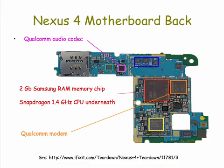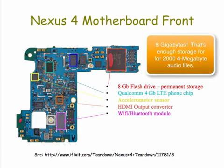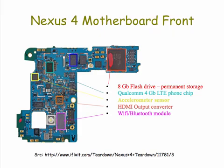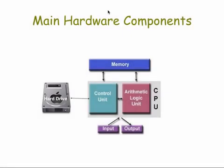And the modem component controls its communication with the internet. If you turn the motherboard around, you'll find still other components. The eight gigabyte flash drive is for permanently storing your apps and your music and your pictures. Eight gigabytes is eight billion bytes or eight billion characters. You also have the chips for the phone, for communicating with the internet. The HDMI chip is for displaying high definition output on your touch screen. So those are some of the main hardware components and concepts.